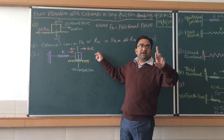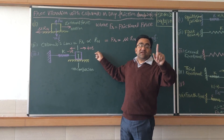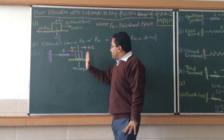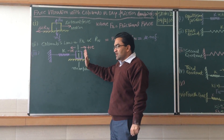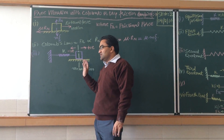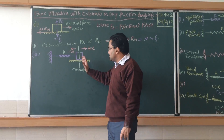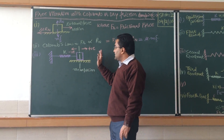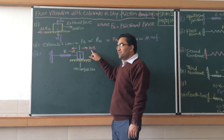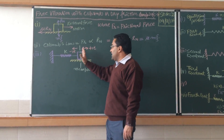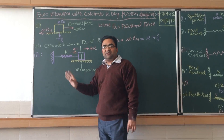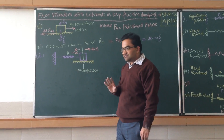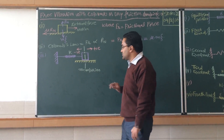During that displacement, the velocity will be x-dot and the acceleration will be x-double-dot. If the displacement, velocity, or acceleration is on the right side of the mean position, they will be taken as positive. If they are on the left side of the mean position, they will be taken as negative. This is our assumption before solving the derivation.